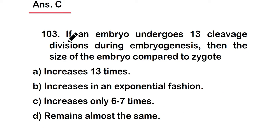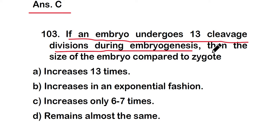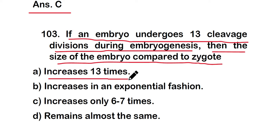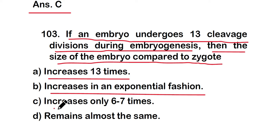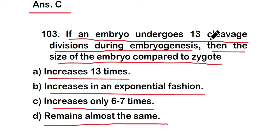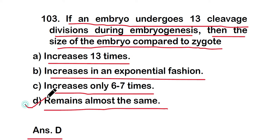Question 103: If an embryo undergoes 13 cleavage divisions during embryogenesis, then the size of the embryo compared to the zygote: (a) increases 13 times, (b) increases in an exponential fashion, (c) increases only 6–7 times, or (d) remains almost the same. The answer is option D — the size remains almost the same.